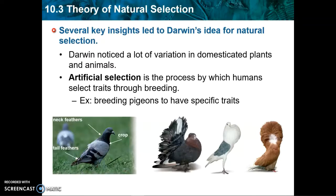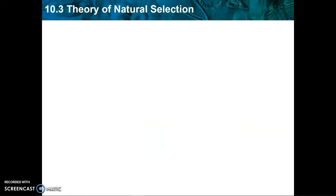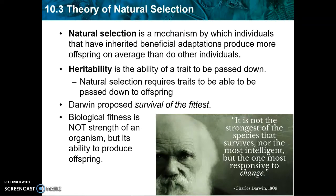What Darwin learned from artificial selection is that it is definitely possible for traits to show up in offspring if the parents also have those traits. So he was getting at the idea of heritability, even though Darwin himself did not know about DNA or genes. That led to the idea of natural selection.